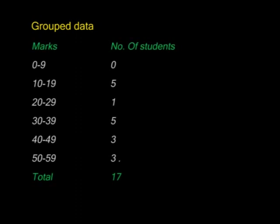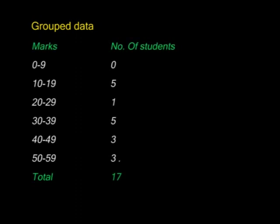Let us now look at grouped data. In the record we had for the mathematics exam, the exact mark for each student was represented — that data was ungrouped. We can now group that kind of data into classes. For example, I can say five students scored between 20 and 29 marks, eight students scored between 30 and 39, and so on.